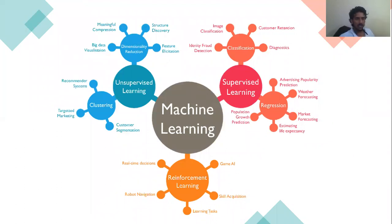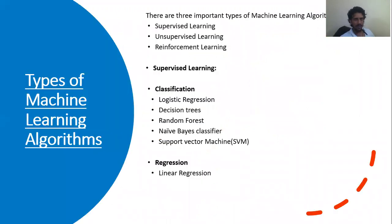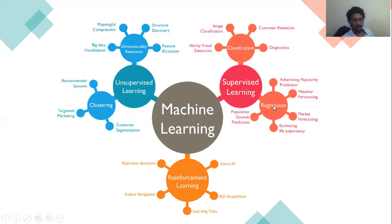Talking about regression, you have linear regression and different types of linear regression models. In machine learning you have supervised learning, unsupervised learning, and reinforcement learning. In unsupervised you have dimensionality reduction and clustering. In supervised you have classification and regression — that's exactly what this structure is trying to show.